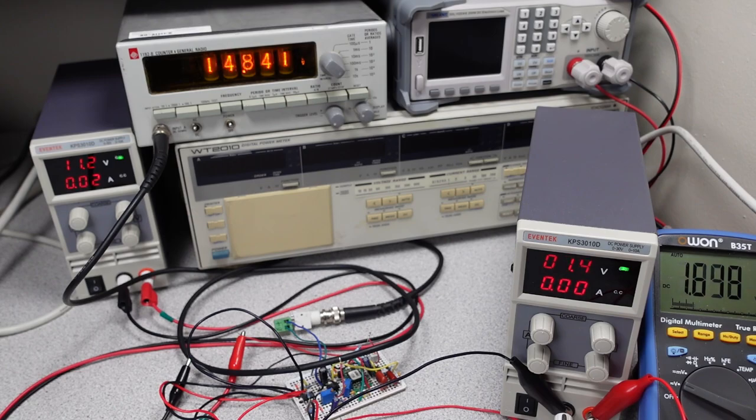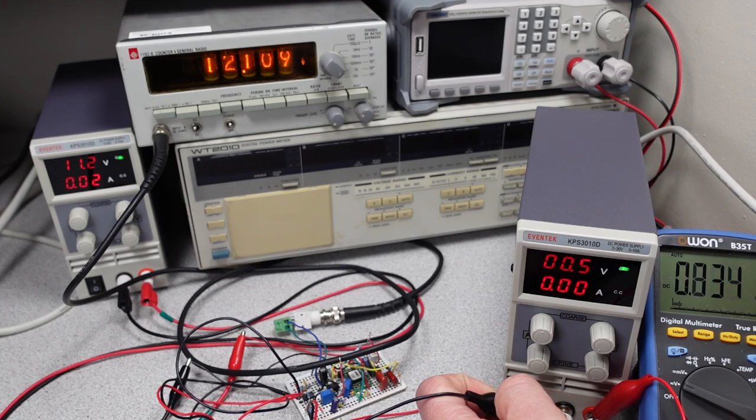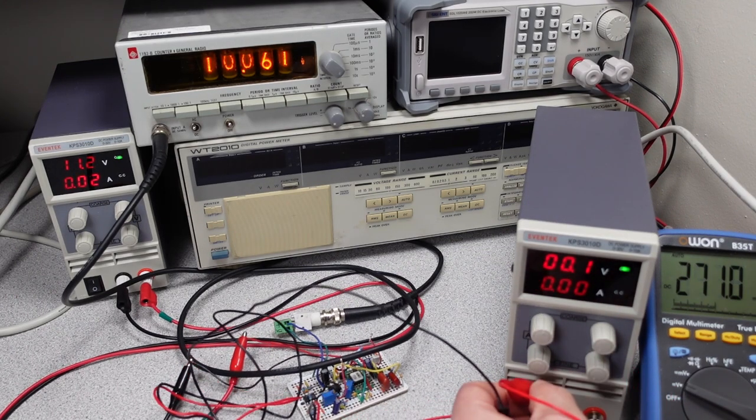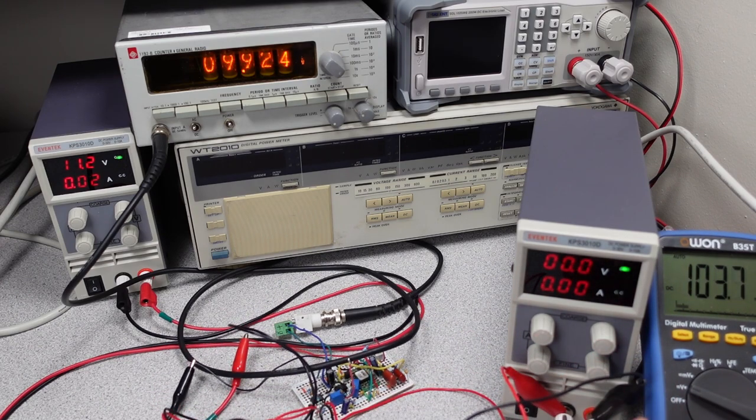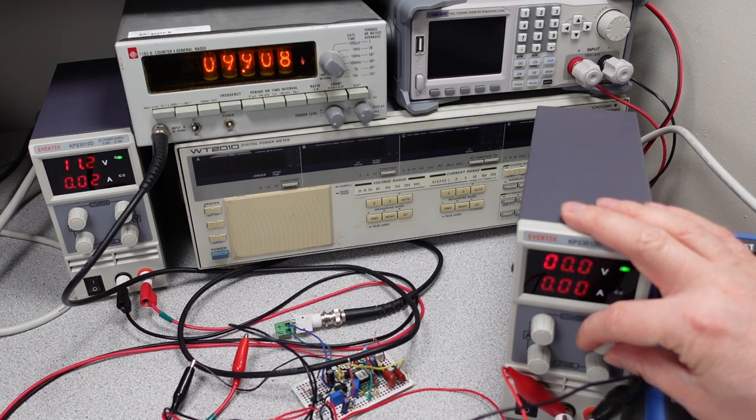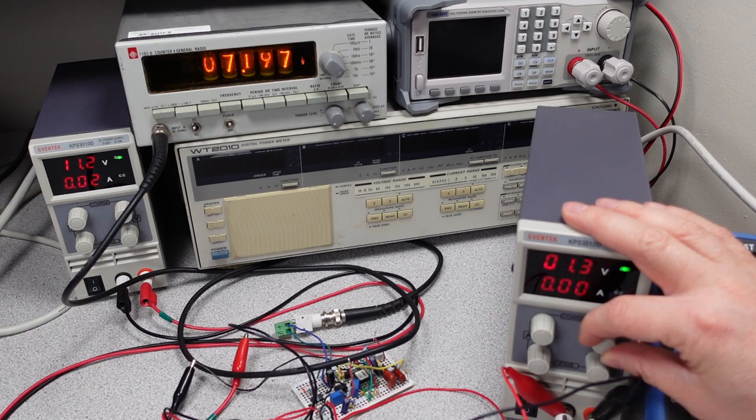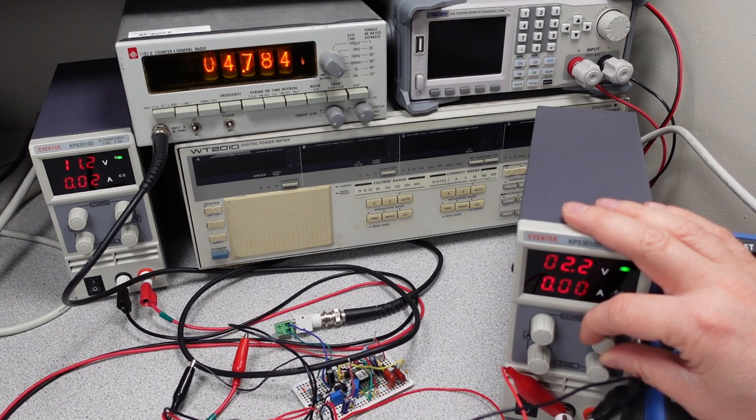Now if we switch things around, so we actually set this up so it's going to be measuring negative voltage, what we should see is that the timer will actually stop at a certain point. And that's exactly what happens. So once we get the voltage low enough, negative enough, so around 2.5V negative, the timer actually stops oscillating. And then when we turn that back up a little bit, we can see that we do get some behavior here.